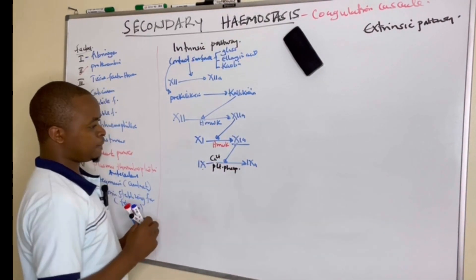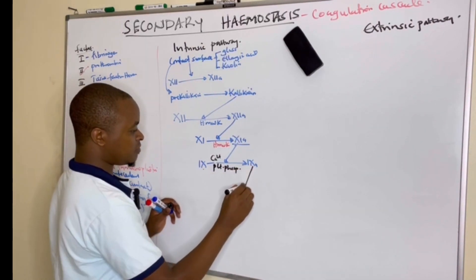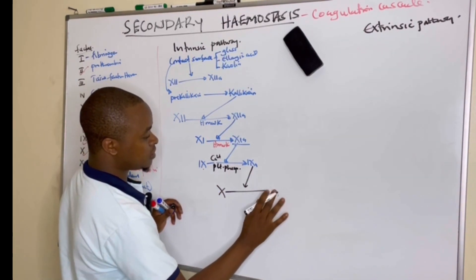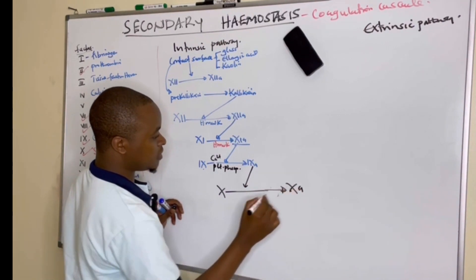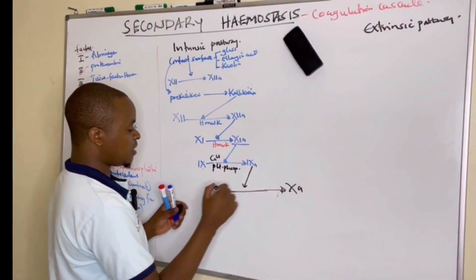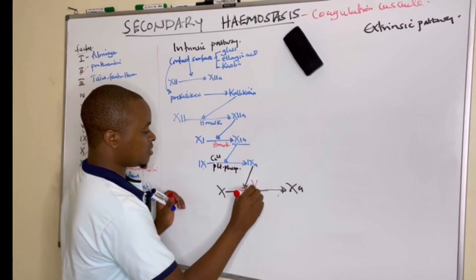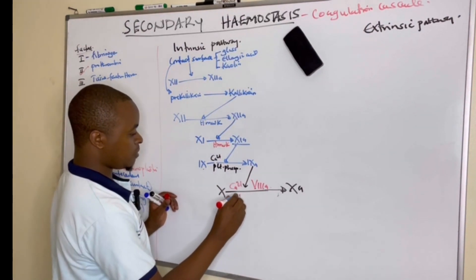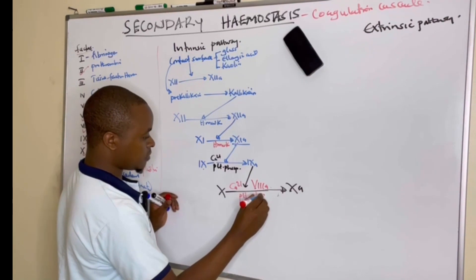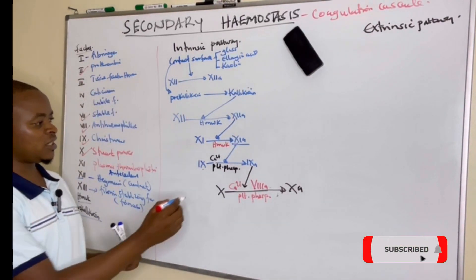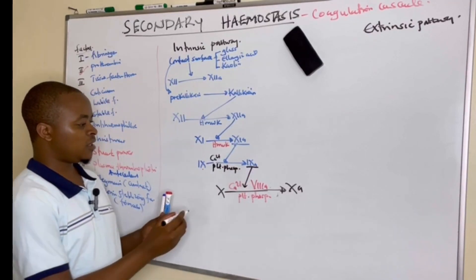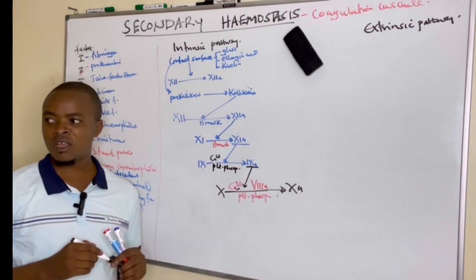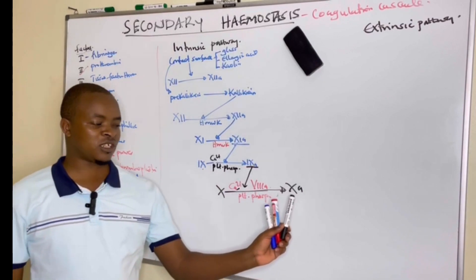Activated factor nine then activates factor ten. Factor nine works hand in hand with activated factor eight in the presence of calcium and platelet phospholipids. So these four components — activated factor nine, calcium as factor four, activated factor eight, and platelet phospholipids — work together to activate factor ten into its activated form.